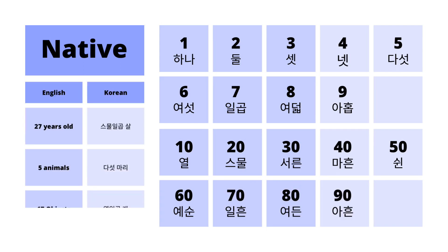Here are some examples. If you want to say 27 years old, you would say 스물 일곱 살. 5 animals would be 다섯 마리, and 17 objects would be 열 일곱 개.